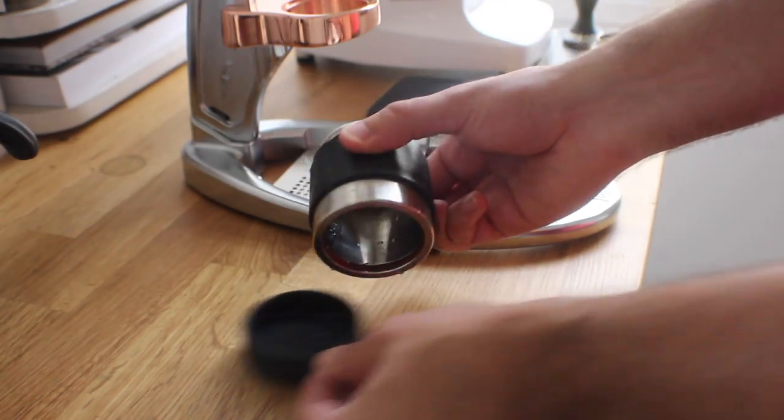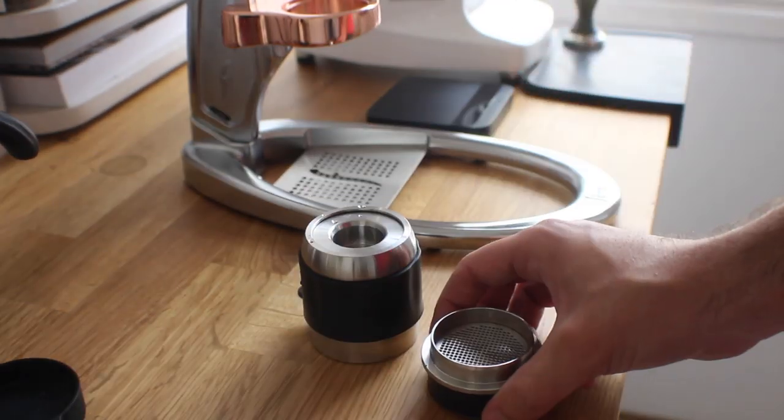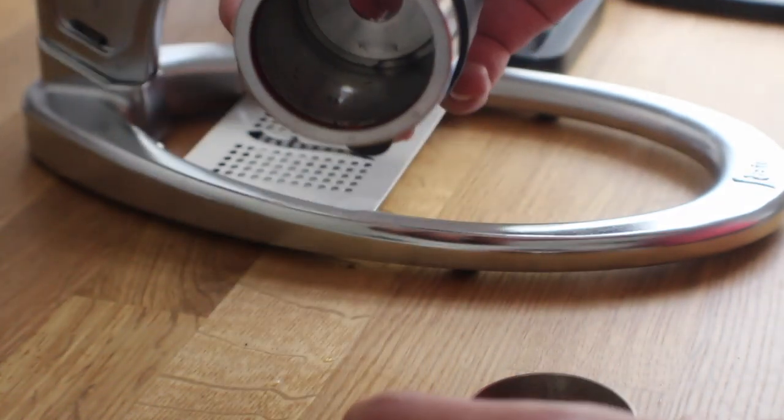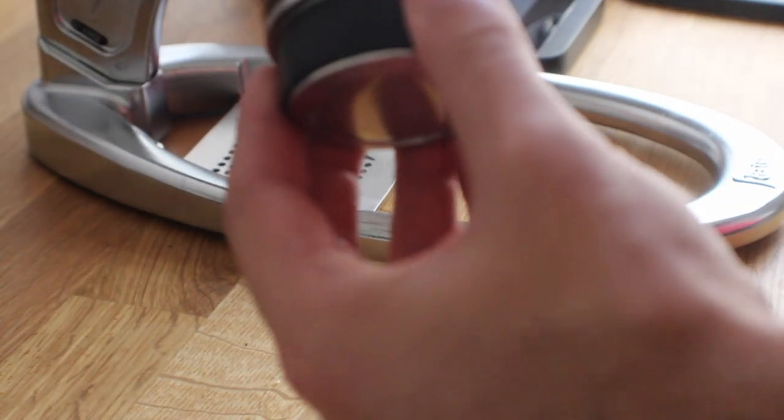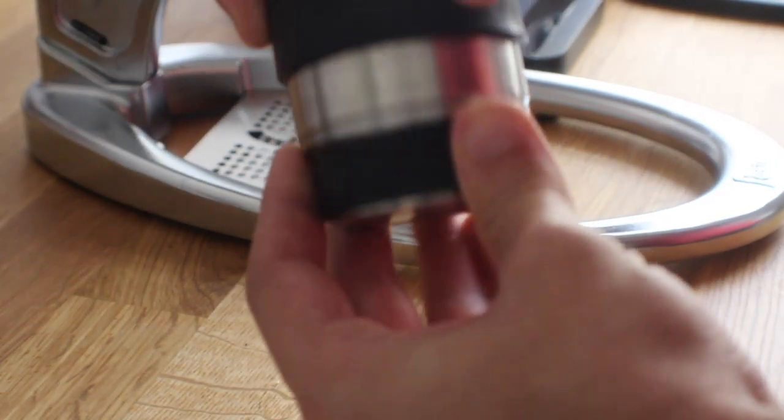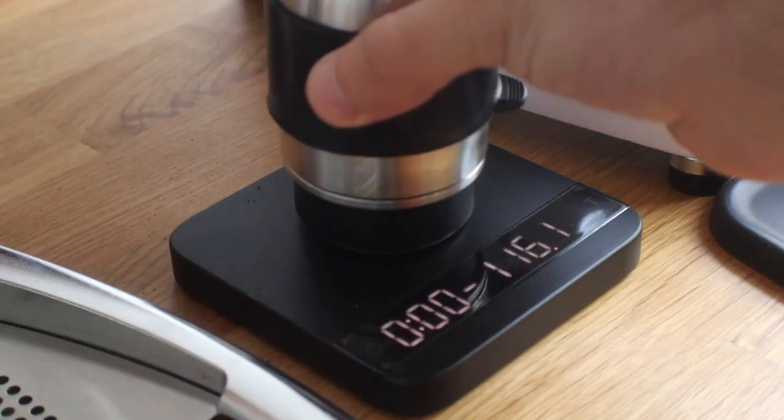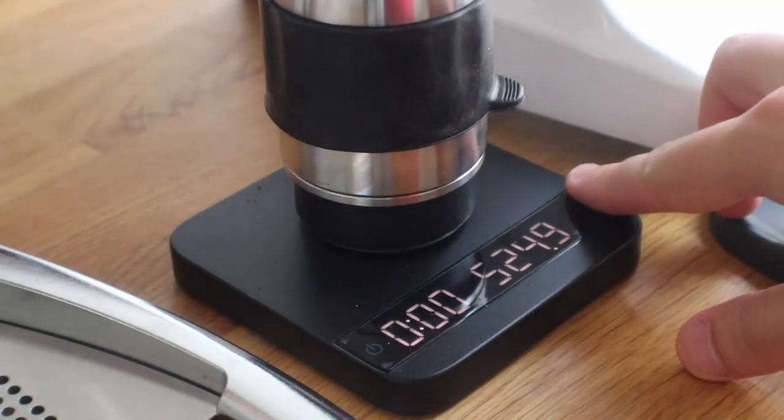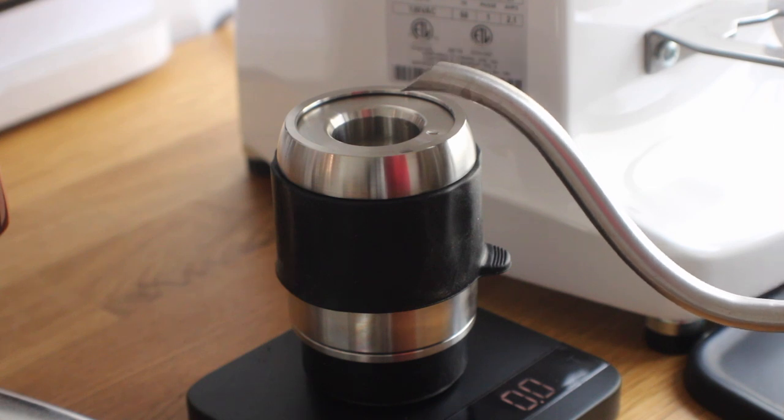This machine is also extremely portable. So if you travel, you camp, you want to just have espresso on the road, this is a nice machine to have because literally you pack it into a nice little briefcase, it comes with you wherever you go. Super simple to put together and take apart. It's just a great piece of equipment for those on the go.